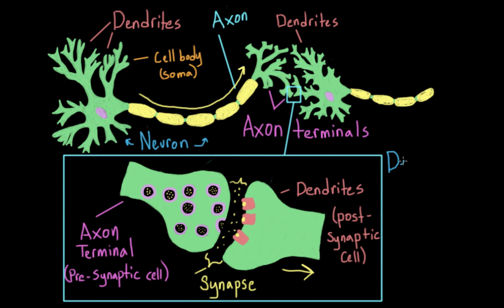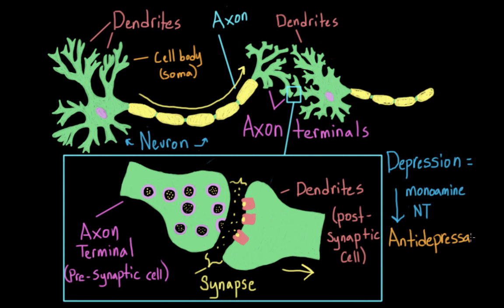Depression itself seems to work on this level. Studies have suggested that depression might be caused by low levels of certain neurotransmitters called monoamine neurotransmitters, and this includes serotonin, norepinephrine, epinephrine, and dopamine. Different theories disagree about the relative contributions of each one. All of the antidepressants we're going to cover in this video work by trying to correct this imbalance — they all cause an increase in the levels of these neurotransmitters, but they do it using very different mechanisms.